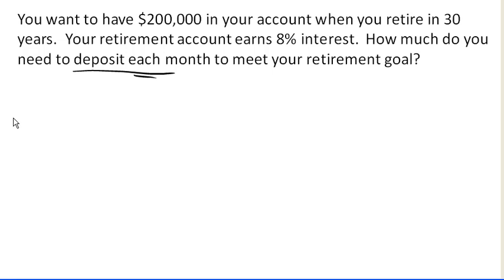So let's start with what we know. We know our interest rate is 0.08. We know we're depositing money each month, and so our number of compounds or deposits in a year is going to be 12. And we know the number of years we're interested in is 30. We also know that the amount that I want in the account after 30 years is 200,000. What we don't know is how much my deposit should be.